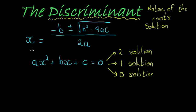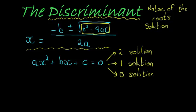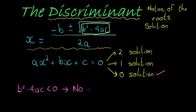So what in my formula is going to give me some guidance on whether I'm going to have two solutions, one solution, or no solution? Well, it is going to be what's underneath the square root. You'll notice that if b squared minus 4ac is less than 0 — in other words, when I substitute and I get a negative number — then I won't be able to find the square root of that number, which means entering this into my calculator, I won't get any real answer. So if that is negative, it tells me I will have no solution, no real roots.